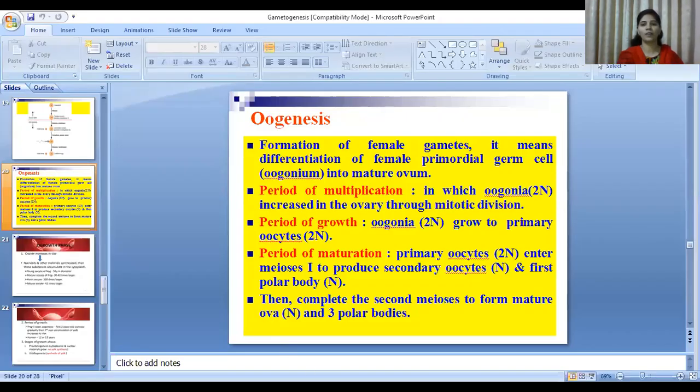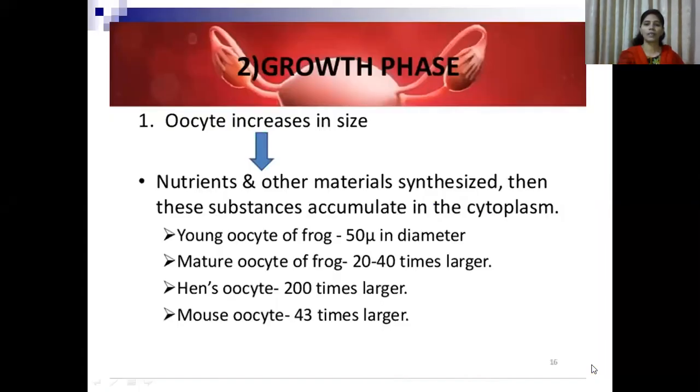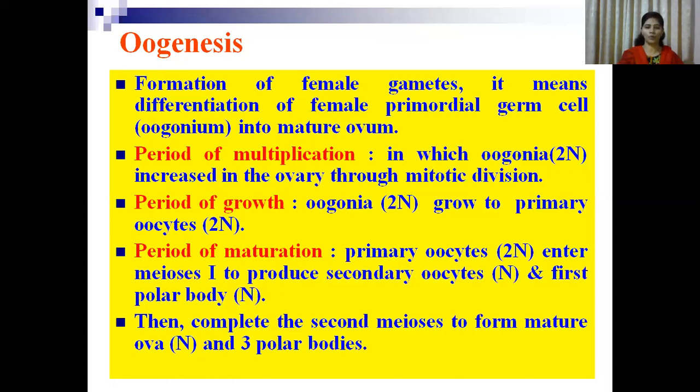Hello students. In today's lecture we will see the next type of gametogenesis which is known as oogenesis. In the previous lecture we started with the process of gametogenesis, which is divided into two types: spermatogenesis and oogenesis. In the last lecture we covered spermatogenesis in detail, but in today's lecture we will start with the process of oogenesis.